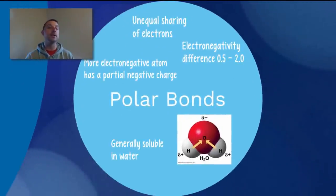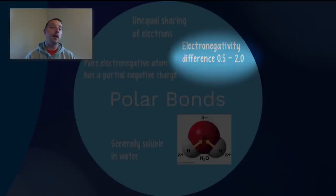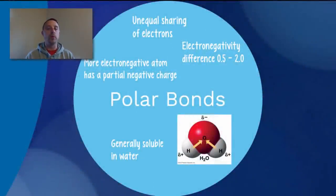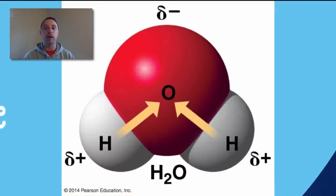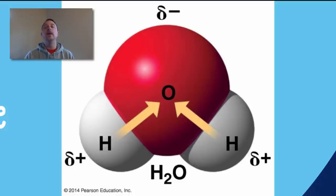If the electronegativity difference is a little bit above what we see in a nonpolar bond, but not quite large enough for one atom to ionize the other, then we end up with a polar covalent bond. In this case, the electrons are still shared, but unequally. The more electronegative atom will pull the electrons to it a little bit more strongly, so the electrons will spend more time orbiting that atom. In our polar compound example of water, the more electronegative atom — oxygen — becomes slightly negatively charged with a partial negative charge, and the hydrogen atoms become partially positively charged because they don't have the electron around them as much.